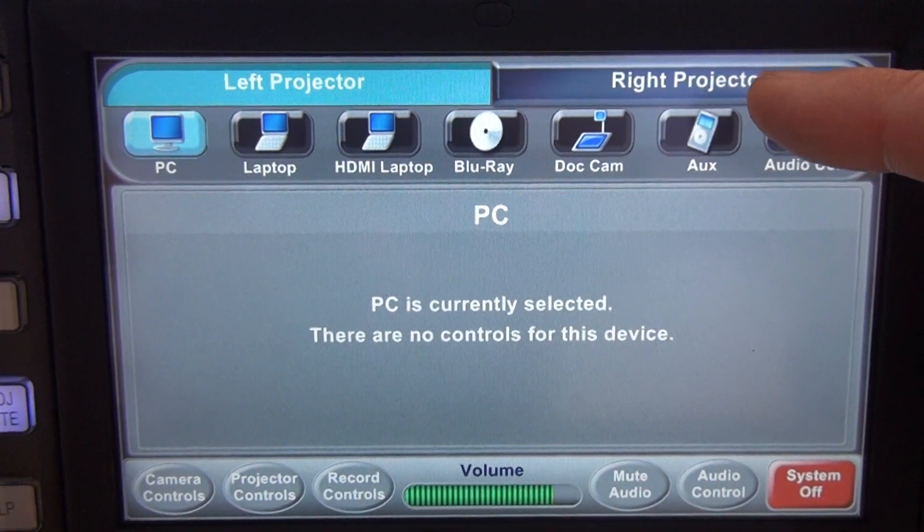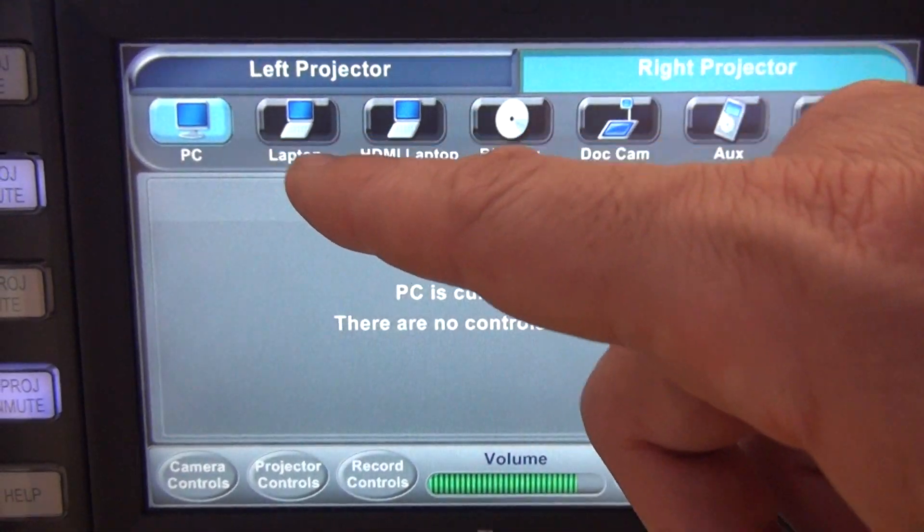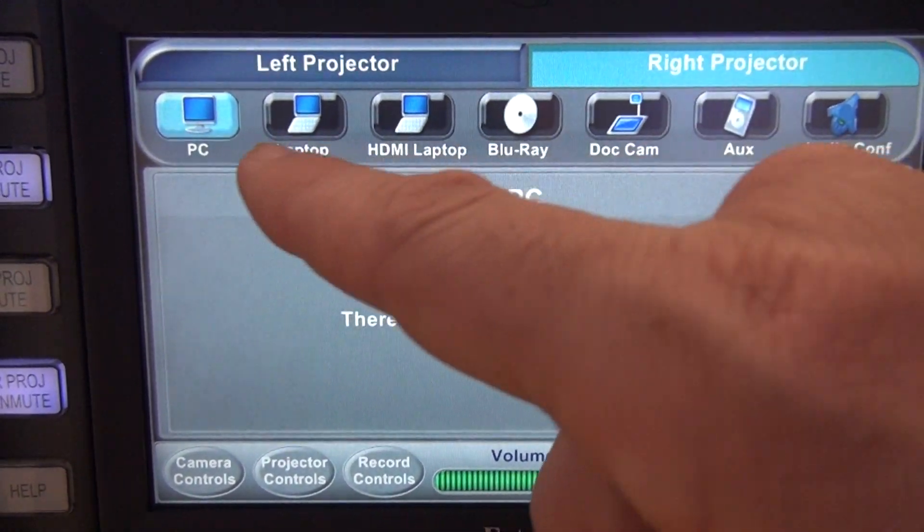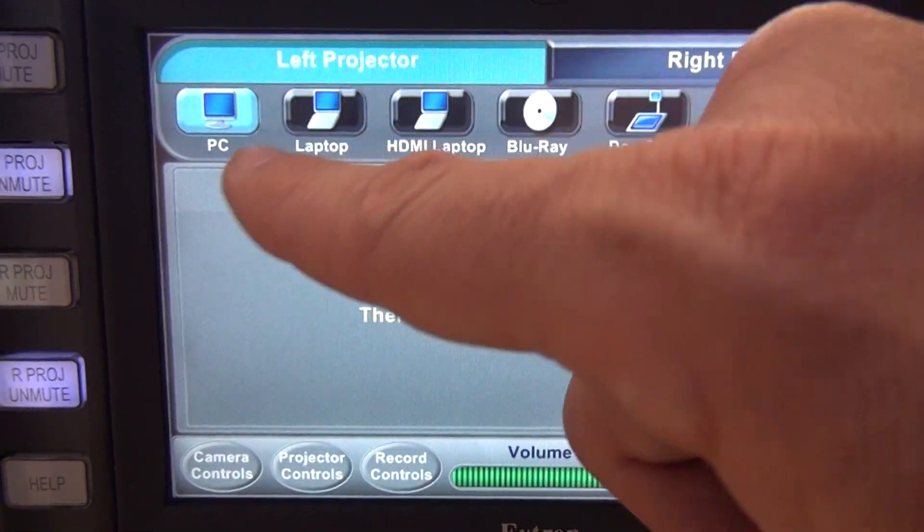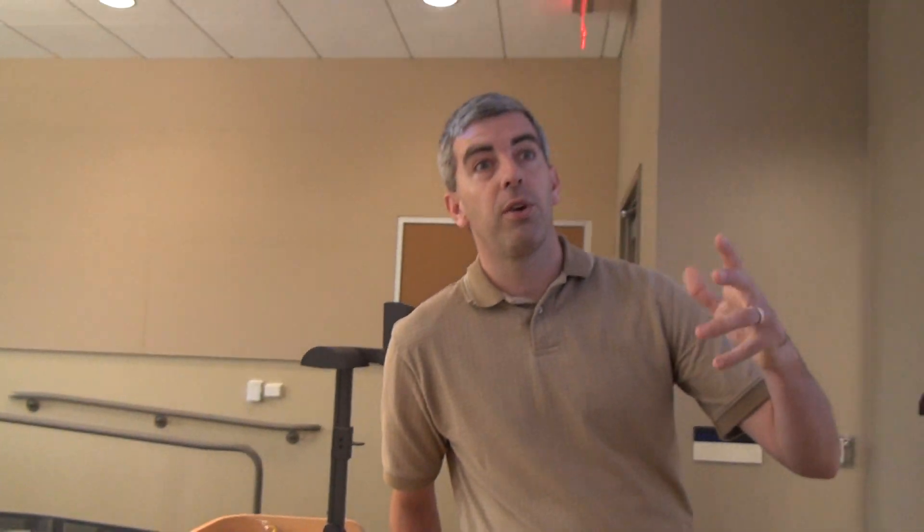If we wanted to switch something on the right projector, we would have to hit the right projector tab and then change that source as well. So right now we have PC on the right projector and PC on the left projector. So if we turn and look at the front of the room, both screens for us are both going to be showing the PC.